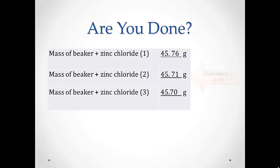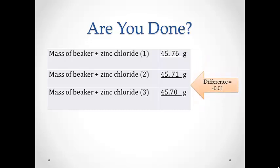For example, in our first heating we have a mass of 45.76 grams, and in our second heating we have a mass of 45.71 grams. This is a difference of negative 0.05 grams, which means we are not within our 0.02 grams, and we should repeat our heating. After heating for a third time, we have a difference of negative 0.01 grams, which is within our 0.02 gram difference, and so we can use 45.70 grams as our official mass of our beaker and zinc chloride.